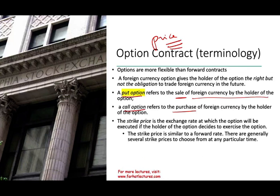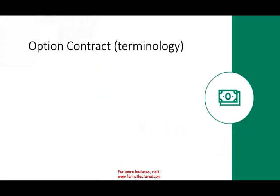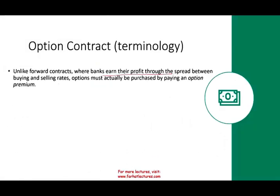The strike price is similar to the forward rate, and there are generally several strike prices to choose from at any particular time. Most foreign currency options are purchased directly from a bank in the over-the-counter market, but they can also be purchased from the Philadelphia Stock Exchange and the Chicago Mercantile Exchange. Unlike forward contracts where banks earn profit through the spread, an option must actually be purchased by paying an option premium — a price such as $1,000, $2,000, $3,000, or $5,000 depending on the option.